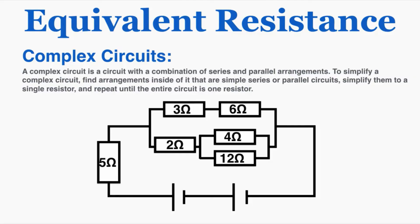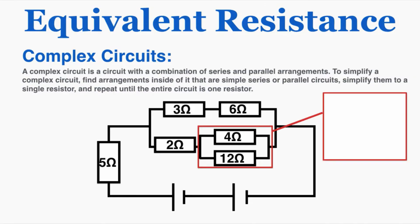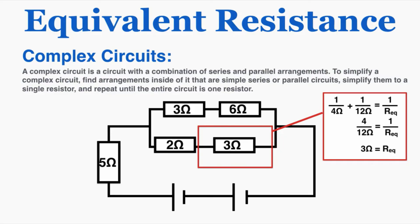A complex circuit is a circuit with a combination of series and parallel arrangements. To simplify one, find arrangements inside it that are simple series or parallel circuits, simplify them to a single resistor, and repeat until the entire circuit is one resistor. For example, identifying two resistors in parallel and applying the parallel rule gives an equivalent resistance of 3 ohms — so those two behave like a single 3-ohm resistor.